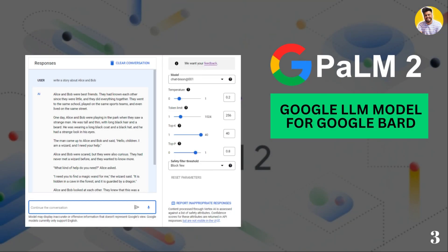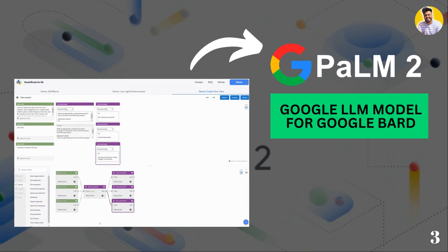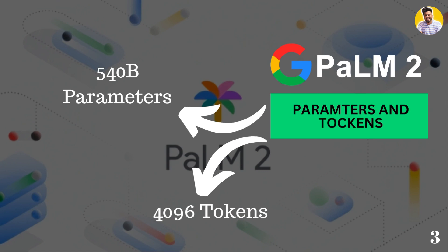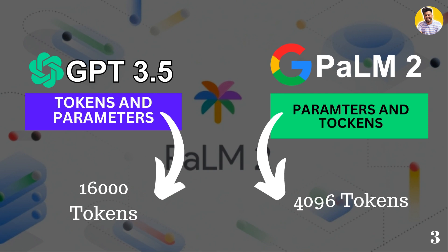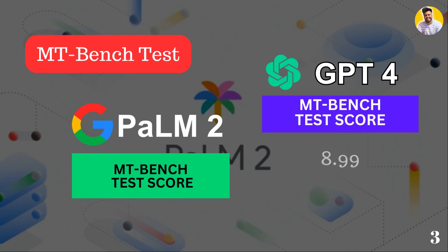Our next large language model is PaLM-2, released by Google. Google focused on commonsense reasoning, formal logic, mathematics, and advanced coding in 20-plus languages with PaLM-2. The largest PaLM-2 model is trained on 540 billion parameters and has a maximum context length of 4,096 tokens — much less than GPT-4 or GPT-3.5. PaLM-2 scored 6.40 in the MT-Bench test.